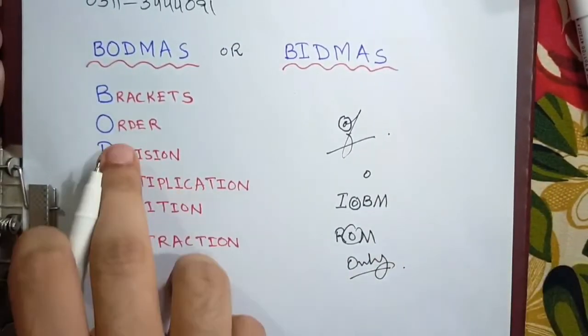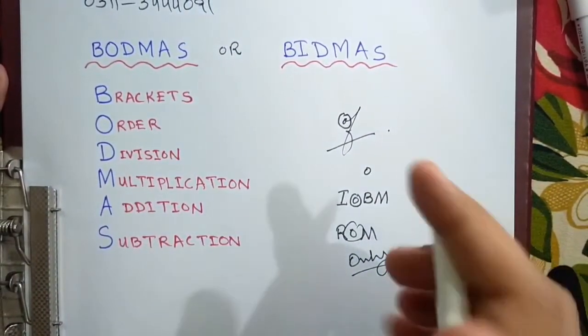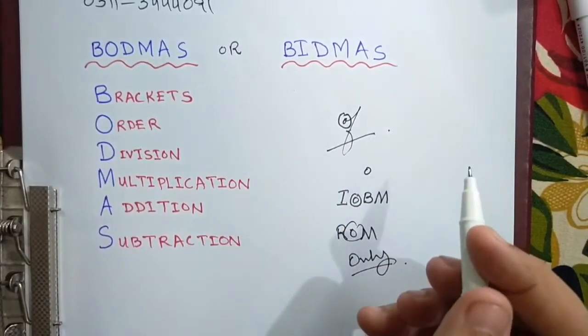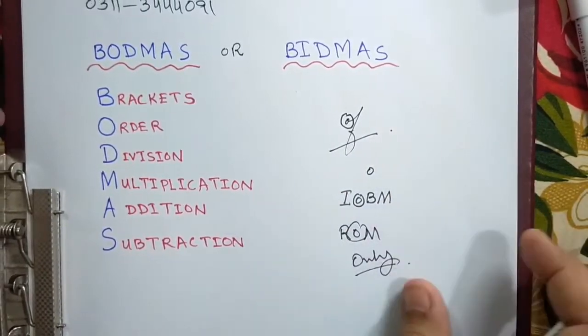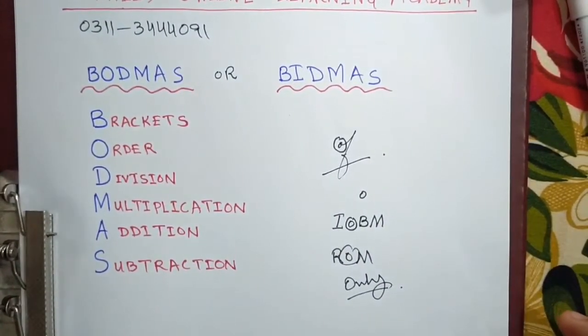O here stands for only, okay, so this O stands for order. Generally there are three types of brackets which are taught in schools, but actually there are four.